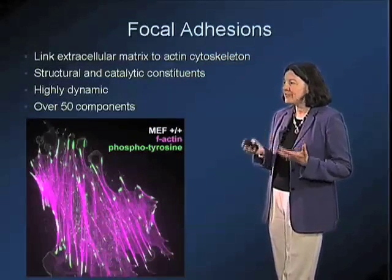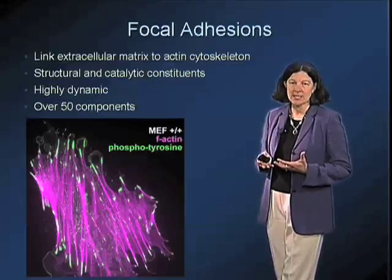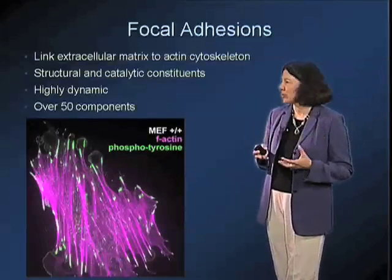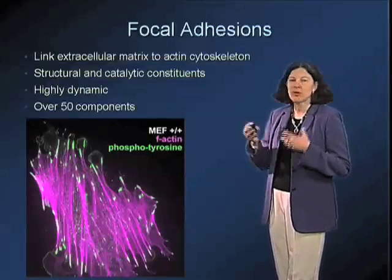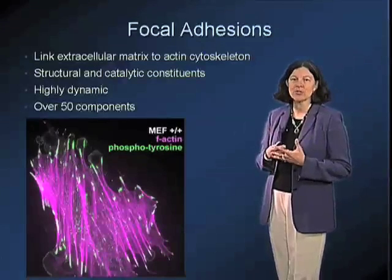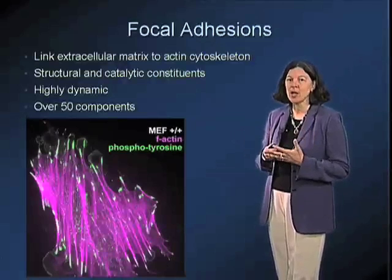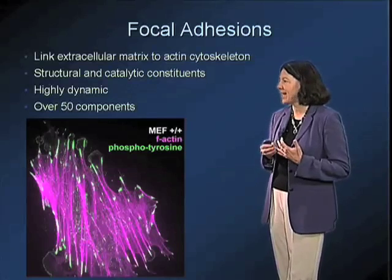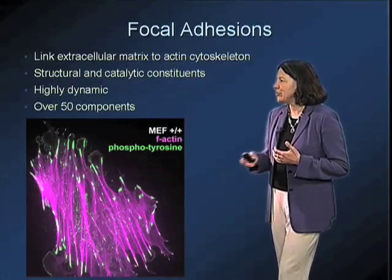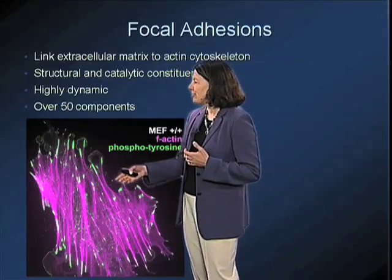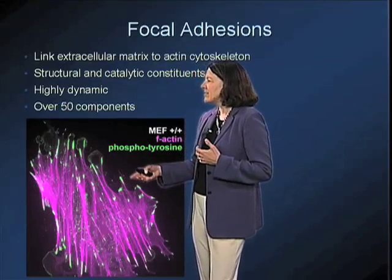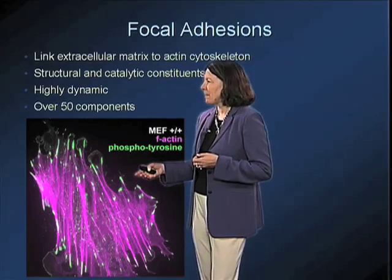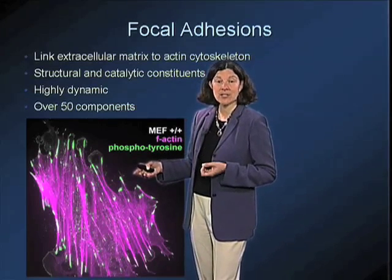There are over 50 components that are present with integrins at these focal adhesions, and these are highly dynamic structures where proteins are coming and going. There are both structural components and catalytic constituents, one example of a catalytic constituent being tyrosine kinases and their substrates.